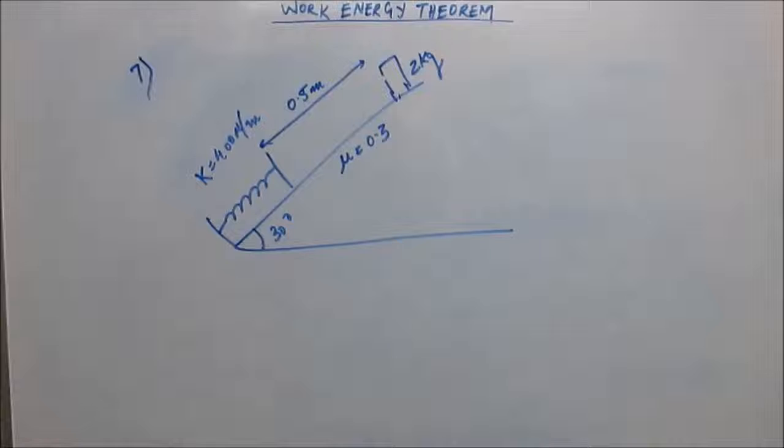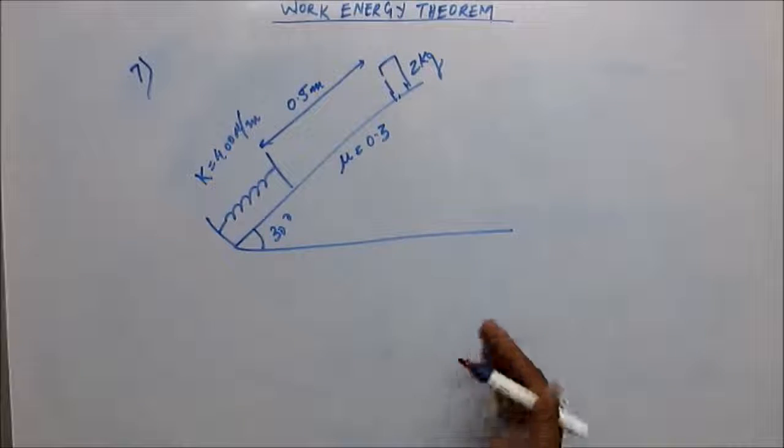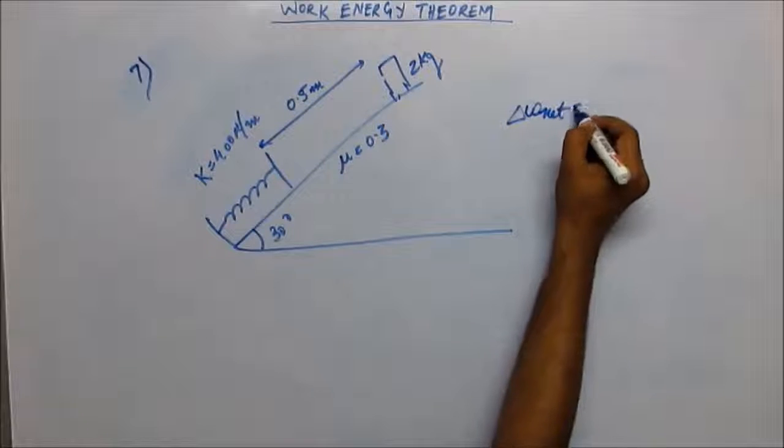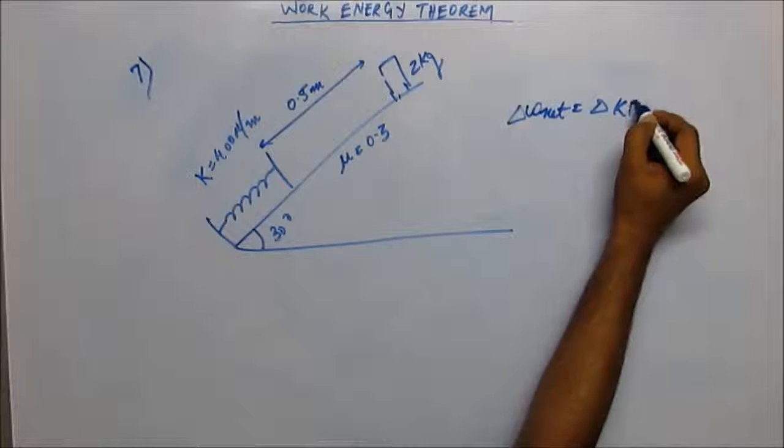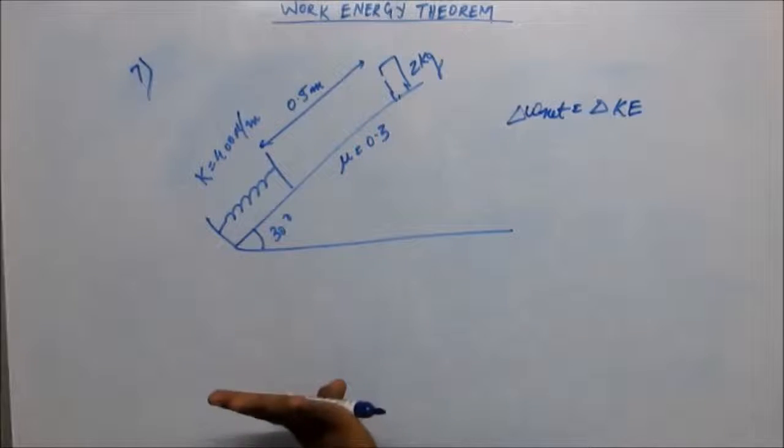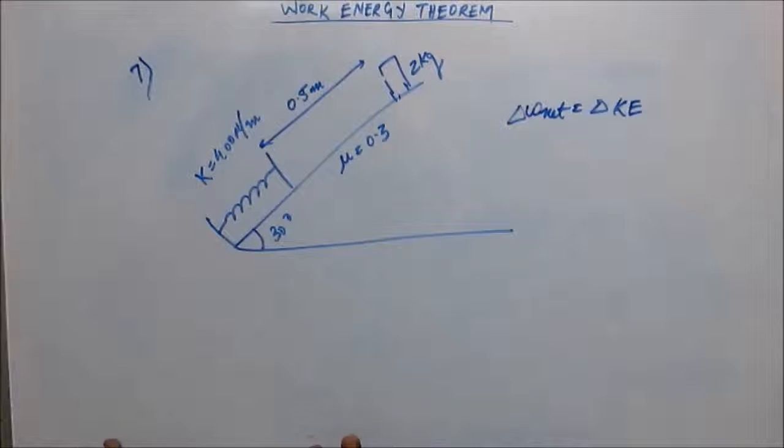Let's use work energy theorem because that's what we've been studying and it's pretty simple. Net work done is change in kinetic energy. Change in kinetic energy will be zero - initially it's zero, finally it will come to momentary rest. So change in kinetic energy is zero.